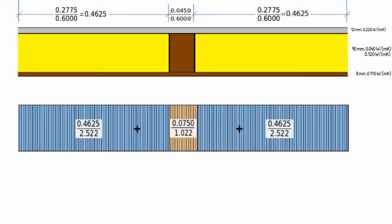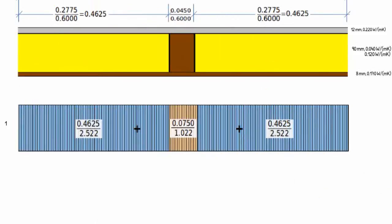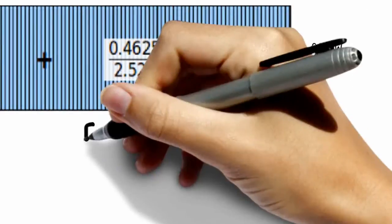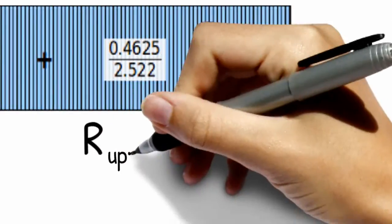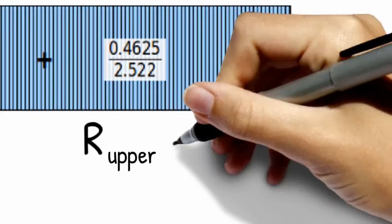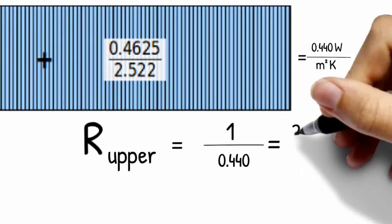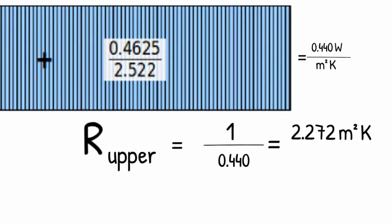Now we start with area weighting and taking the percentage of the ranges and putting this over the resistance of that range. By doing this we get the inverse of the upper margin of our thermal resistance range. Inversing this again gives us our upper margin of the thermal resistance range. In our case, 2.272 square meter times kelvin over watt.